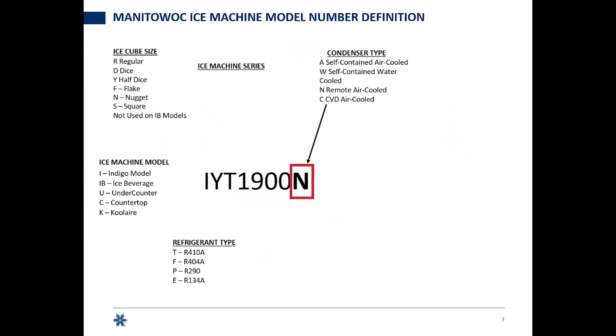After that, we're going to call out the condensing option. We have four major condenser types. This one's going to be called out by the letter N as in November, letting you know it's a remote air-cooled system.